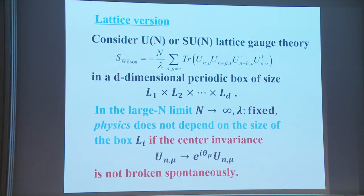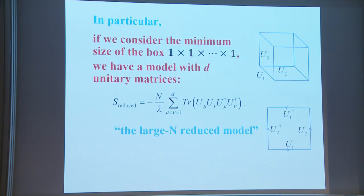If we consider the minimum size of the box, 1×1×...×1, we have a model with D unitary matrices. Everything is periodic, so the matrix here and here are the same. For example, for the 1-2 plane we have U1, U2, U1†, and U2†. This is called the large-N reduced model.